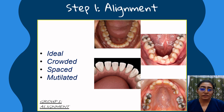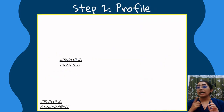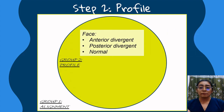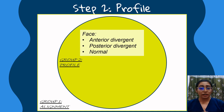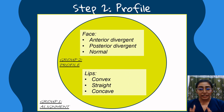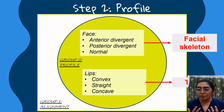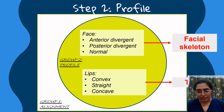The second step involves the description of the profile of the patient. We first describe the divergence — there can be an anterior divergence if the mandible is forwardly placed, or a posterior divergence if the mandible is retarded. The lips of the patient are also described and can be convex, straight, or concave. It is essential to describe both because divergence depicts the underlying facial skeletal relationship, while lip position depicts and represents the underlying teeth inclinations.